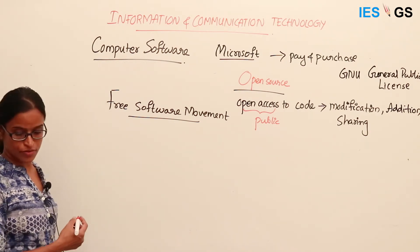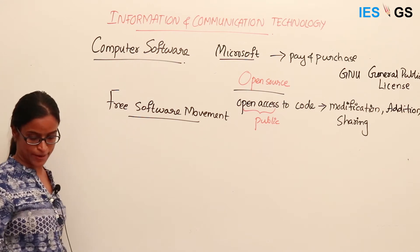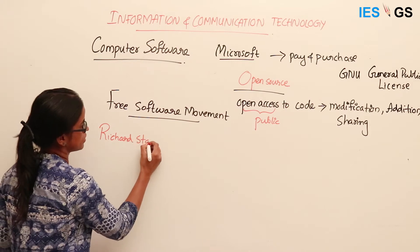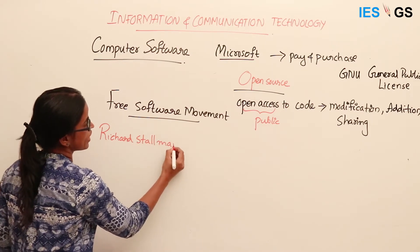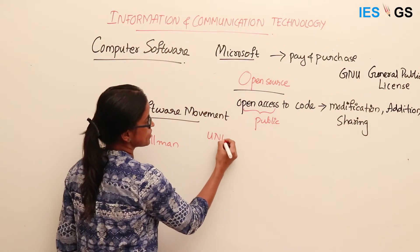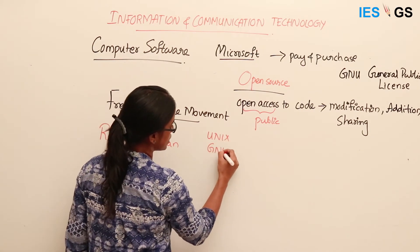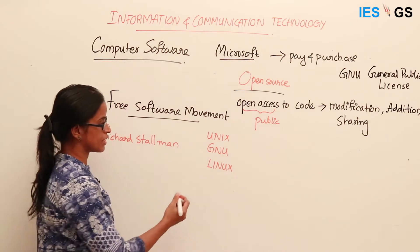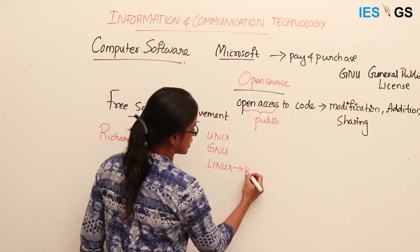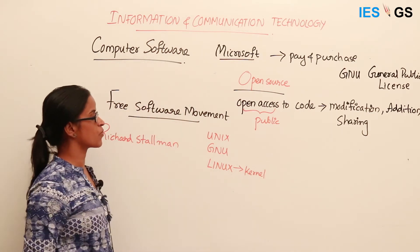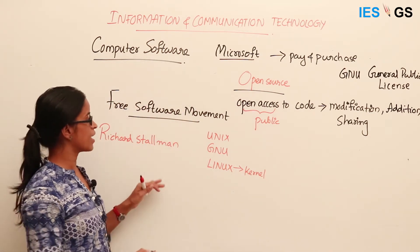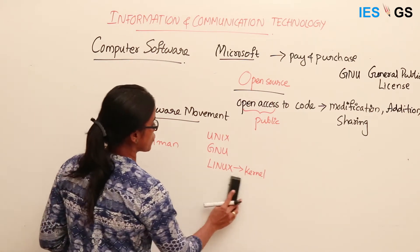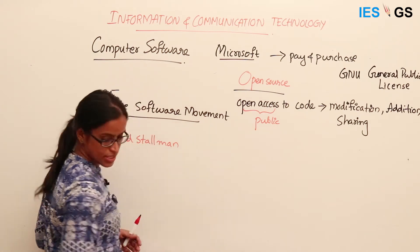Their aim was to free software development from multinational companies and make it more common. The free software movement was started by Richard Stallman. At that time there were operating systems including Unix, GNU, and Linux. When Linux was invented, it had a kernel which was incorporated into the Unix operating system, and they combined to form an open source software, which we generally call Linux.